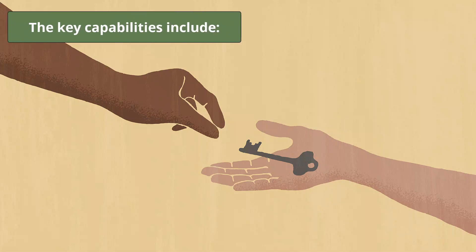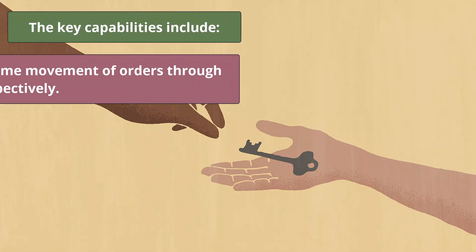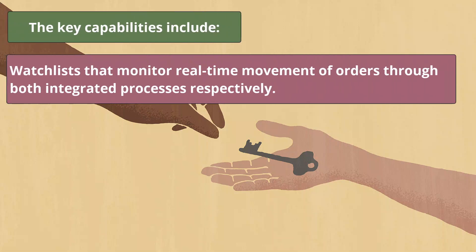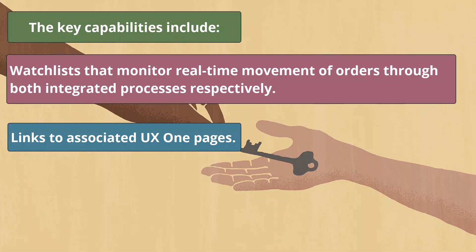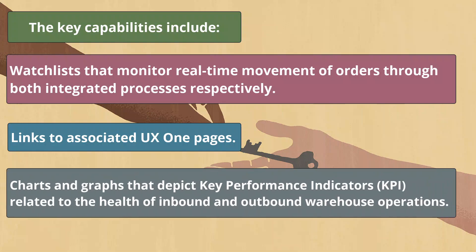The key capabilities include Watchlists that monitor real-time movement of orders through both integrated processes, links to associate UX1 pages, and charts and graphs that depict the key performance indicators related to the health of inbound and outbound warehouse operations.